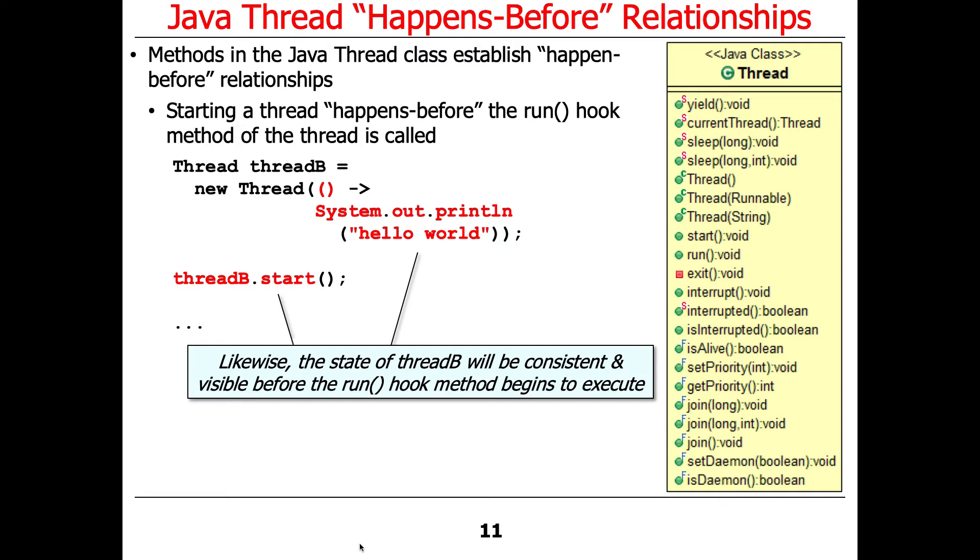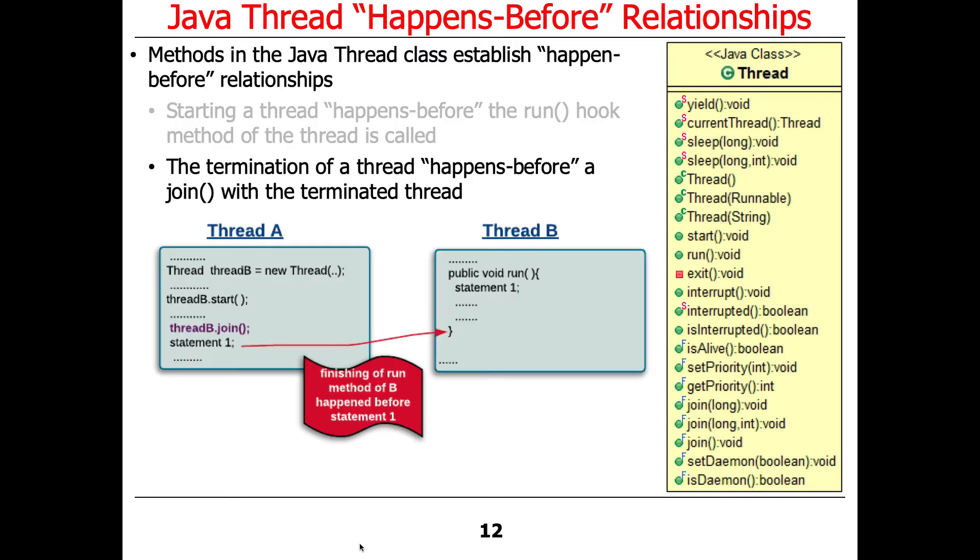Likewise, the state of thread B will be consistent and visible before it starts to execute. The inverse of this, or the converse of this, is where the termination of a thread happens-before a join with the terminated thread.